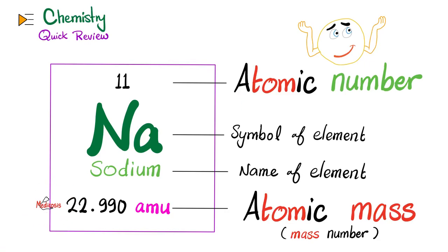What's going on, wonderful people. It's Medicosis Perfectionality, continuing our chemistry quick review playlist — general chemistry for busy people. Today we'll talk about the atomic number as well as the atomic mass, also called the mass number. Is there a difference between mass number and the average atomic mass? Yes there is, and we'll talk about this today.